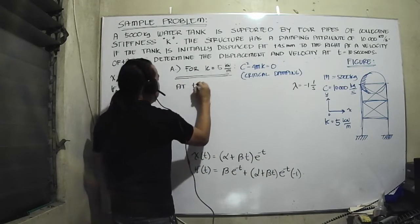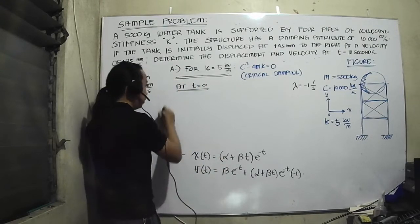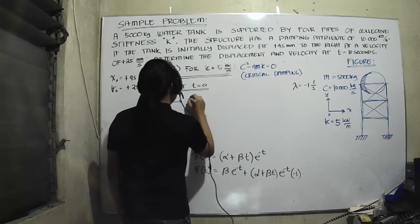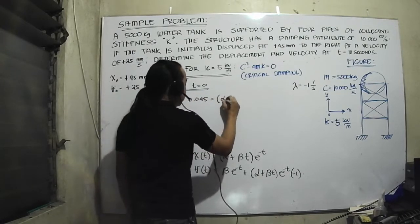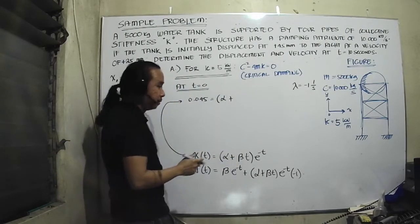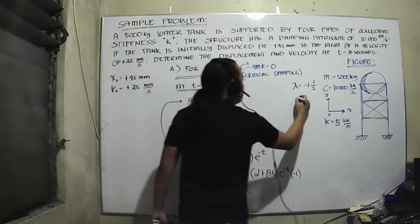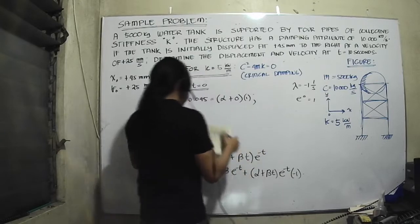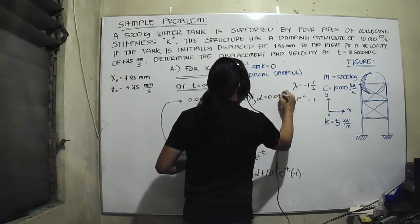At t is equal to 0, let's try to find out the value of α and β. I have these equations to plug in here. x₀ is equal to 0.045. α plus β times 0 equals this, e to the power of 0 is equal to 1, so α is equal to 0.045.